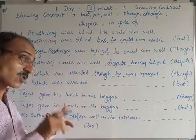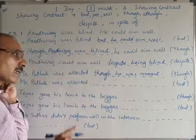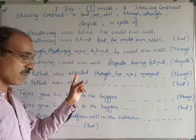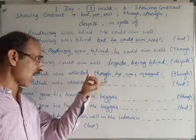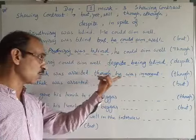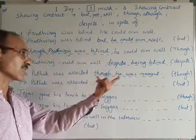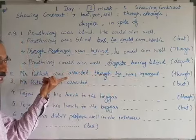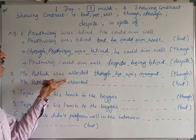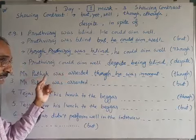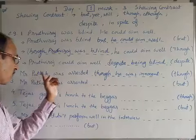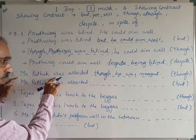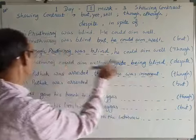Expert English users and teachers note that 'but' indicates contrast. 'Mr. Partook was arrested but he was innocent.' We can also say: 'Mr. Patak was arrested though he was innocent.' Or reversing the clauses: 'Mr. Patak was innocent but he was arrested.' Both are correct ways to express contrast.